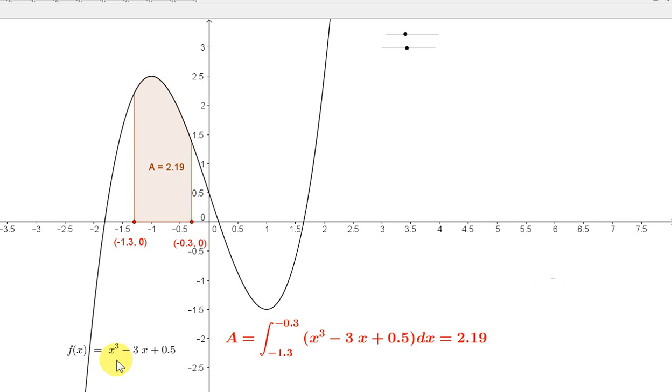Here is a graph of the function f of x equals x cubed minus 3x plus 0.5. We saw in a previous video that we can get the area between the curve and the x-axis by taking the definite integral of the function.